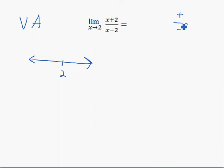On the right-hand side of 2, when I plug in numbers bigger than 2, the top is still positive because it's about 4, and the denominator now is positive because x is bigger than 2. Well, now we have positive over positive.